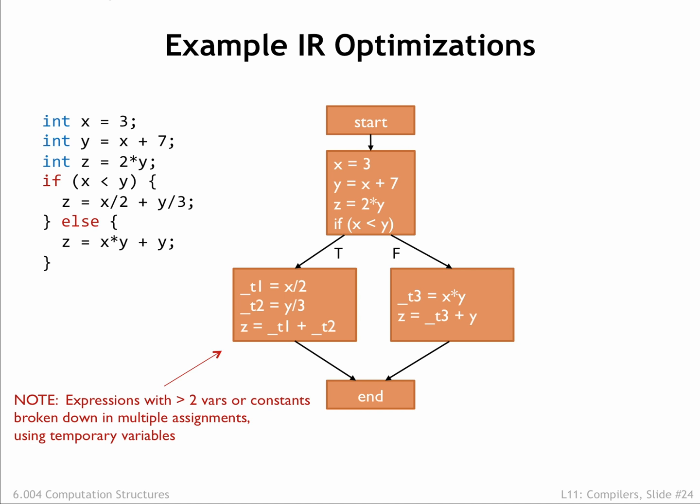To illustrate how these optimizations work, consider the slightly silly source program and its control flow graph. Note that we've broken down complicated expressions into simple binary operations, using temporary variable names to name the intermediate results. Let's get started. The dead code elimination pass can remove the assignment to Z in the first basic block, since Z is reassigned in subsequent blocks and the intervening code makes no reference to Z.